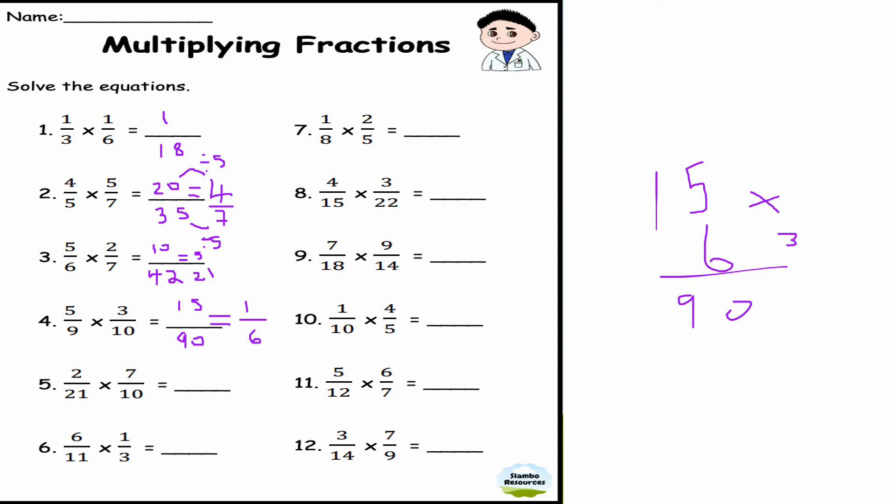2/21 times 7/10. 2 times 7 is 14, 21 times 10 is 210. Dividing top and bottom by 2 because they're even numbers, I get 7/105.